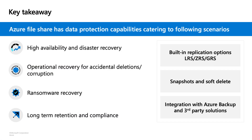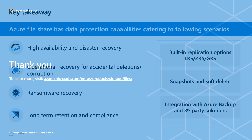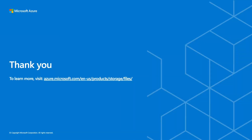To wrap up, here's a quick summary of key takeaways. Azure Files data protection capabilities cut across all key scenarios customers are looking for. HADR is served by built-in replication options like LRS, GRS, and ZRS. Operational recovery for accidental deletions and corruptions is served by snapshots and soft delete. Ransomware recovery and long-term retention are served by Azure Backup integrations and third-party solutions. Thank you for viewing the presentation — refer to our documentation for more information on Azure Files data protection capabilities.